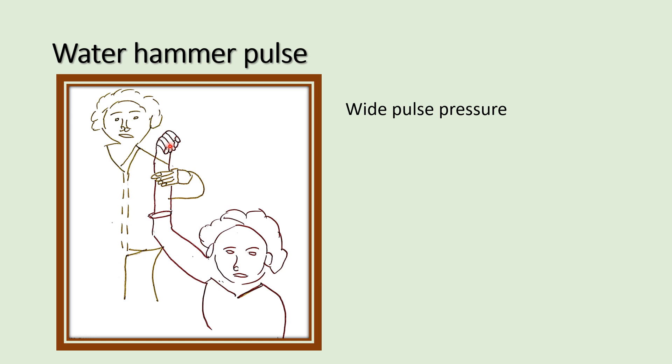Patients having the water hammer pulse have a wide pulse pressure. Wide pulse pressure means the systolic pressure is very high and the diastolic pressure is very low. This is because the stroke volume is high but the peripheral resistance is very low in aortic incompetence, so the pulse pressure increases in conditions like aortic incompetence.